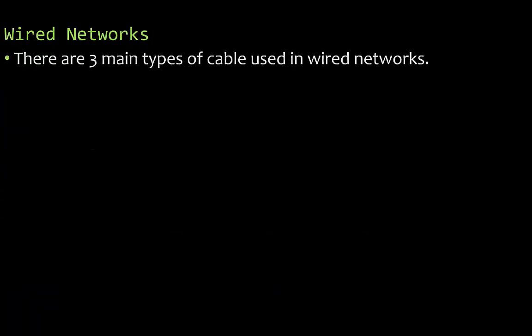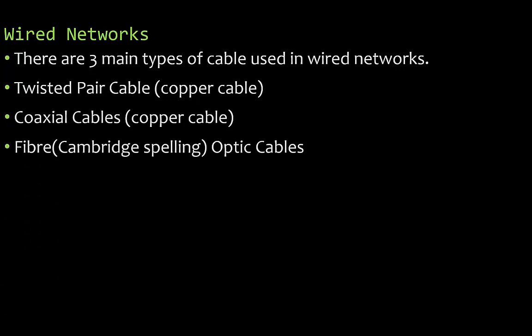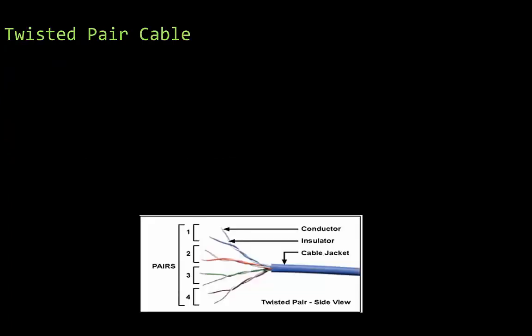So wired networks — there are three main types of cables used in wired networks. That is the twisted pair cable, which is a copper cable; a coaxial cable, which is also a copper cable; and fibre — spelled F-I-B-R-E, that is how Cambridge spells it — those are the fibre optic cables, which are not copper.